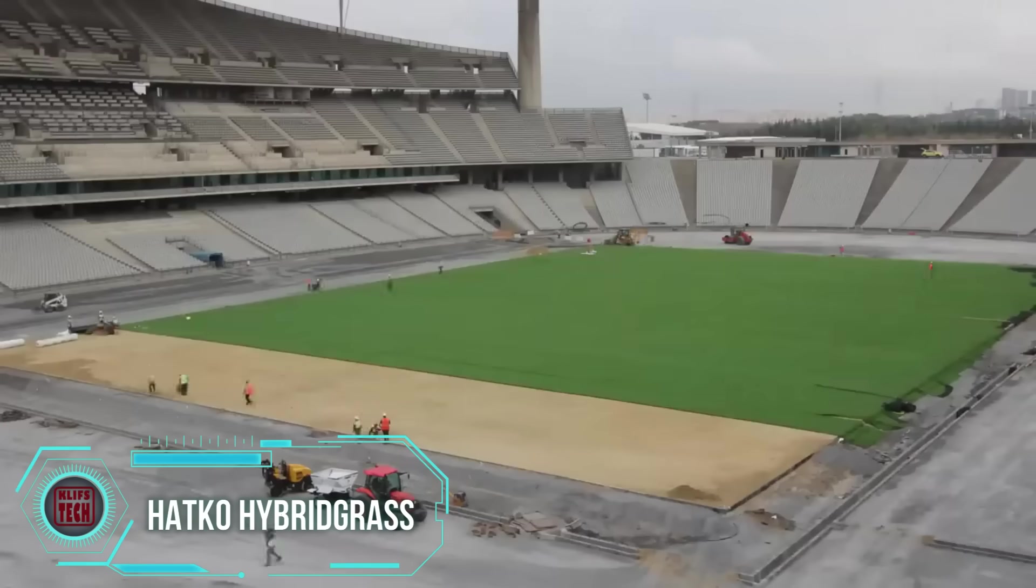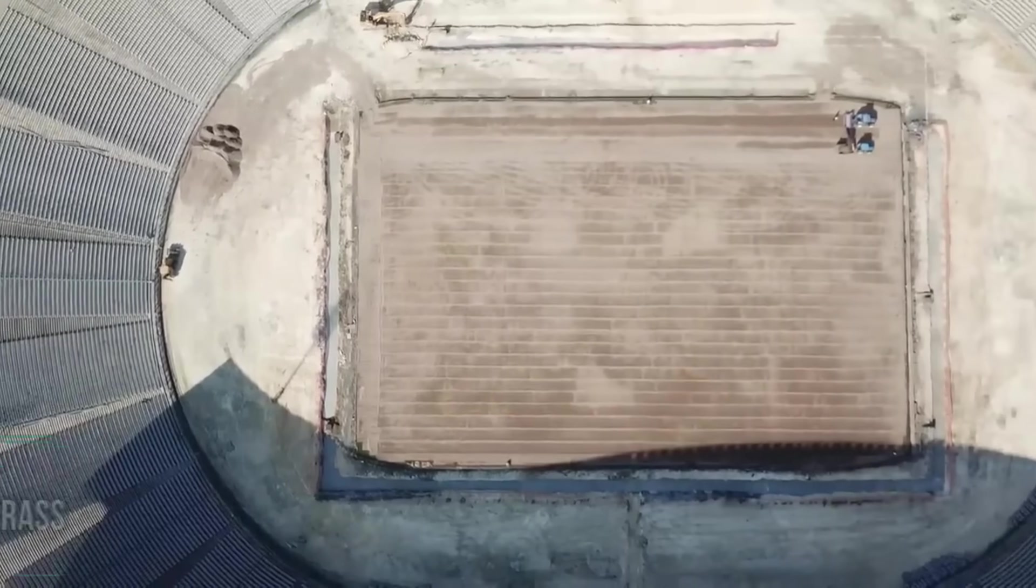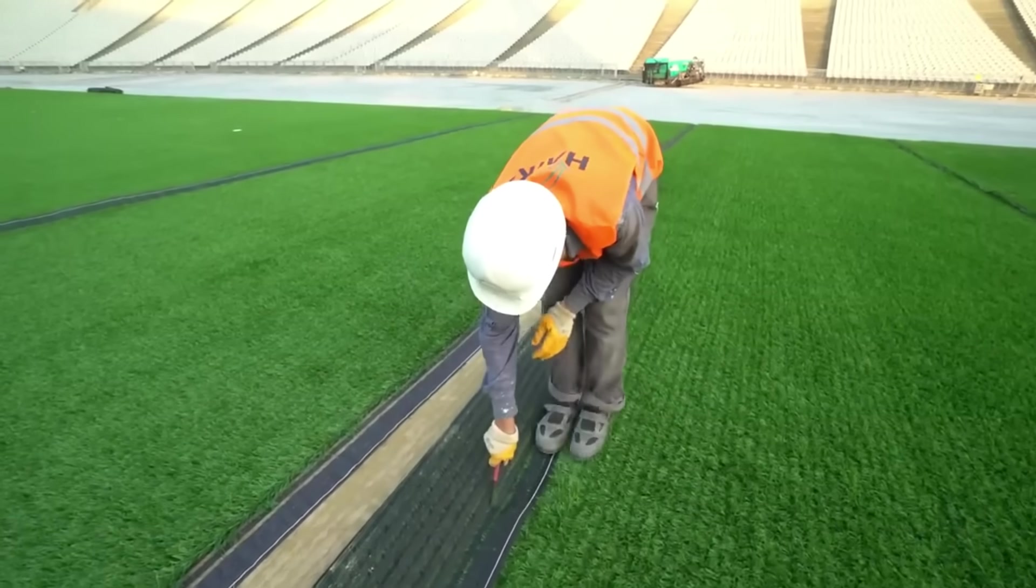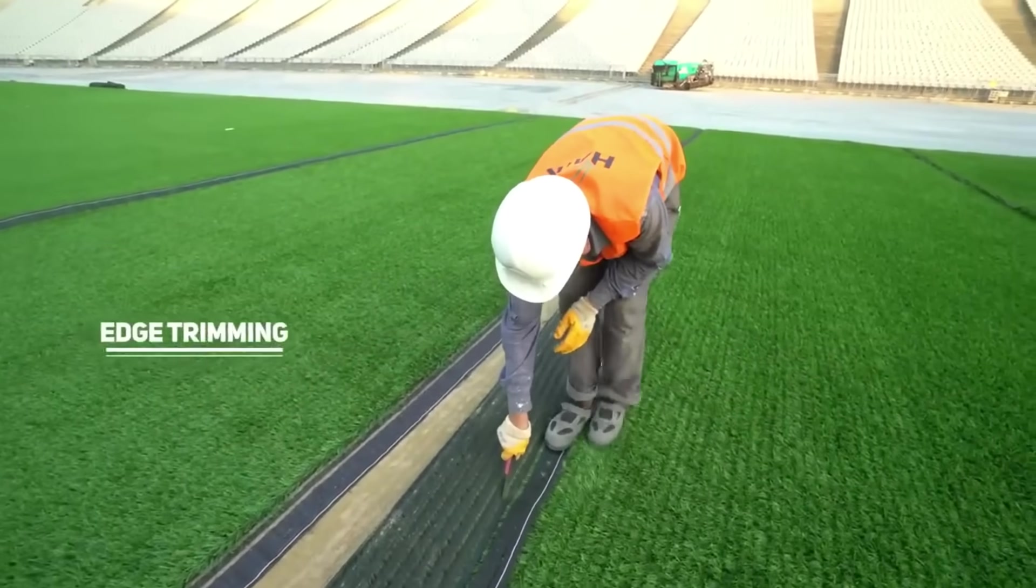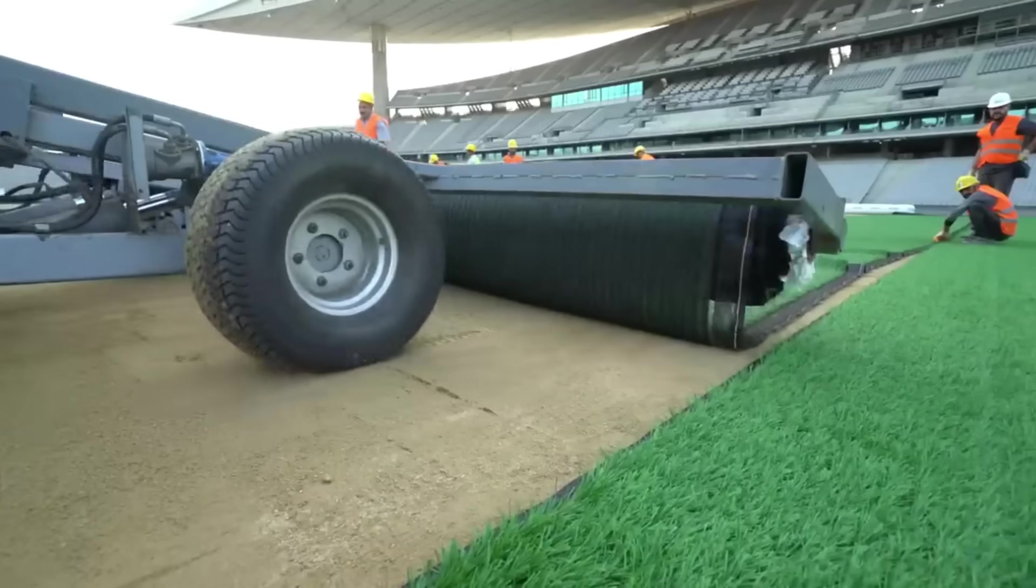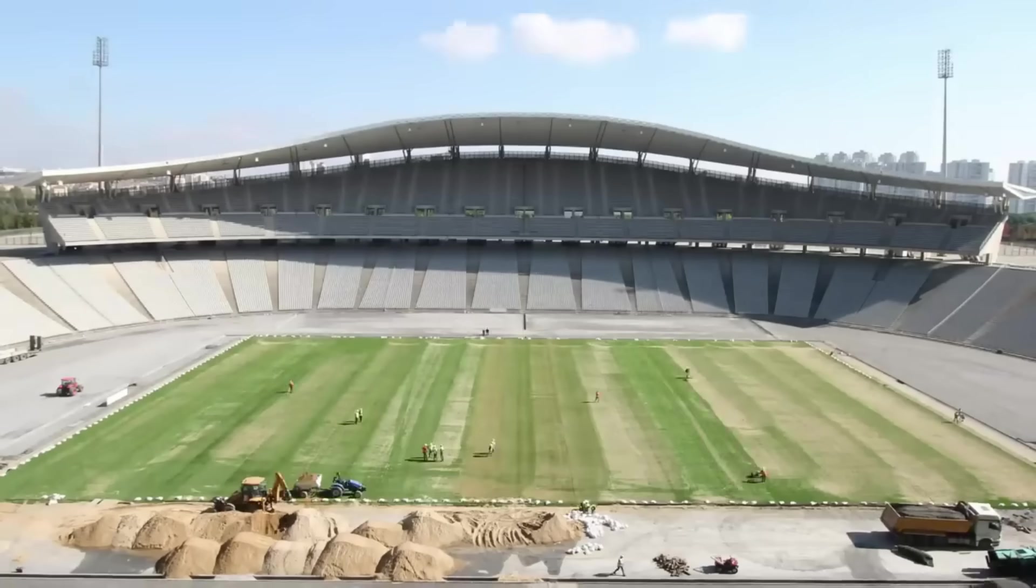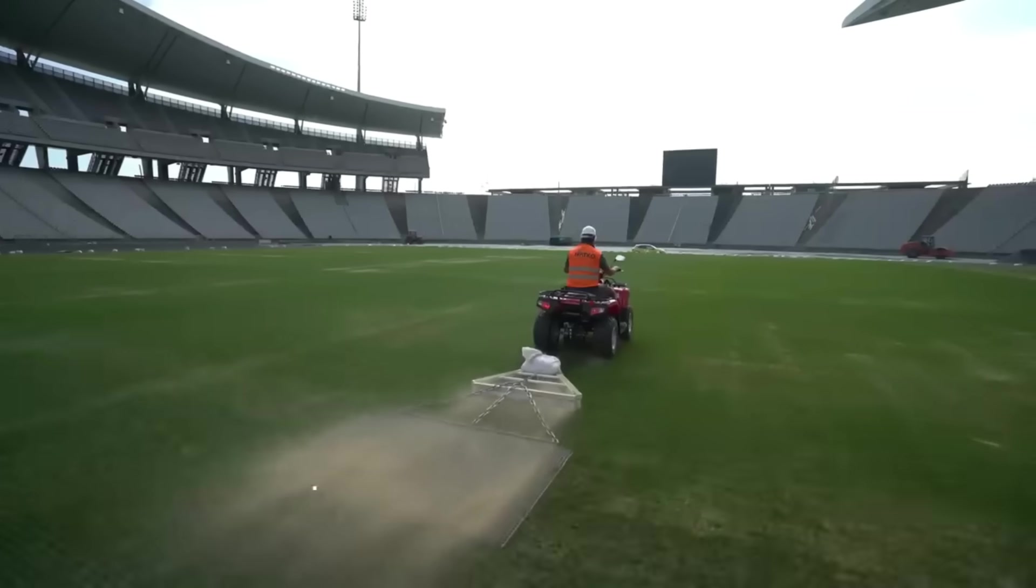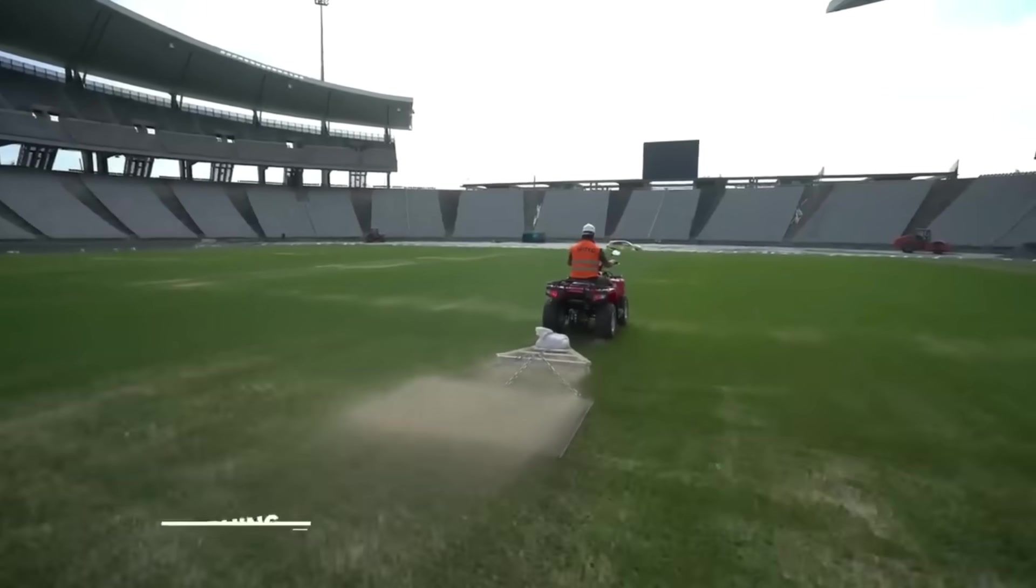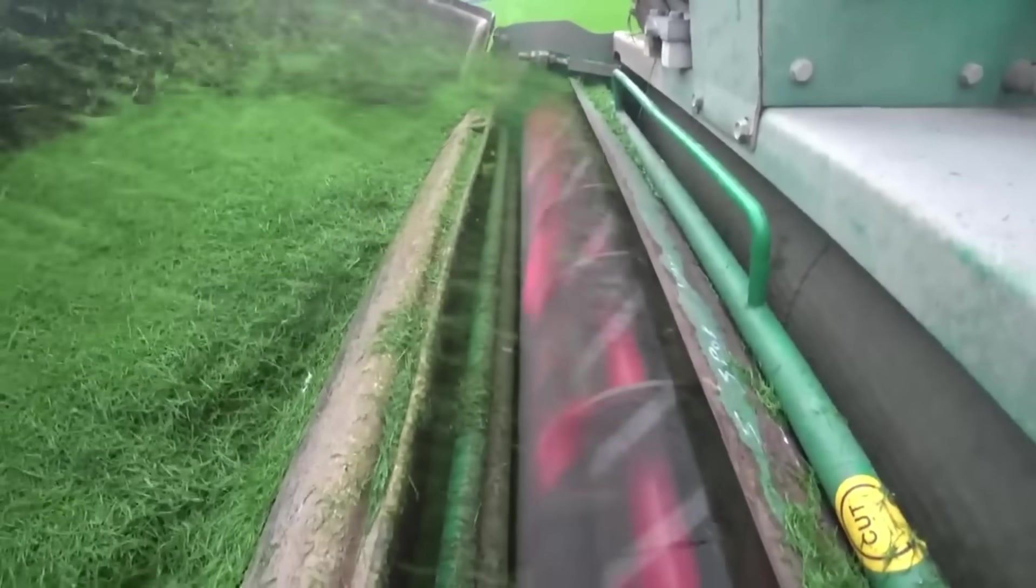Imagine a world where lush greenery thrives effortlessly in stadiums around the globe, from the vibrant streets of South Korea to the scenic landscapes of Chile. Hatco, the visionary behind this green revolution, has crafted a hybrid grass marvel that combines natural splendor with synthetic innovation. Picture a colossal Olympic stadium seating a whopping 80,500 people adorned with this hybrid grass masterpiece.